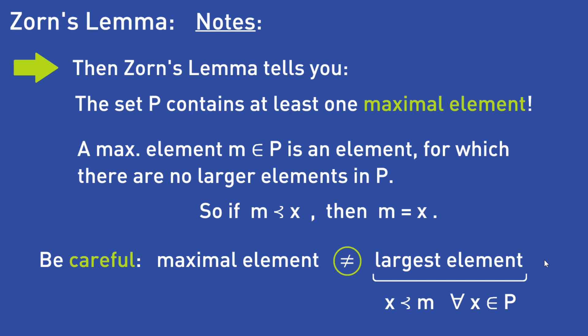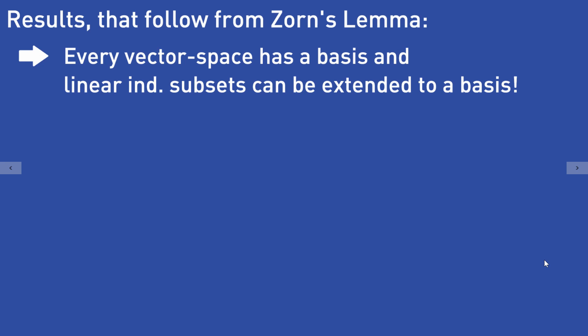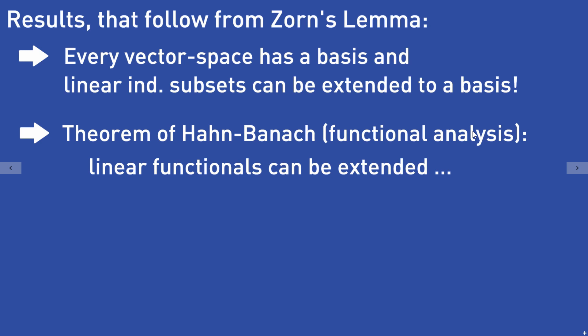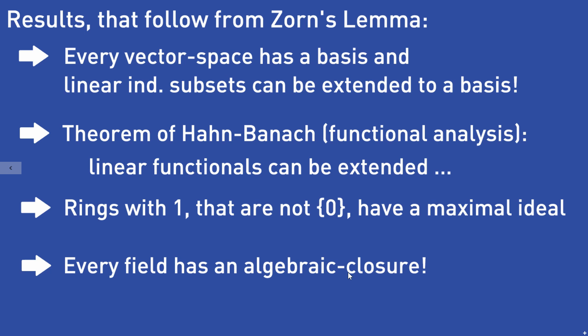Let's take a look at things that follow from Zorn's Lemma. You can show that every vector space has a basis and that linearly independent subsets can be extended to a basis. You can prove the Hahn-Banach theorem from functional analysis, which tells you that linear functionals can be extended. You can also show that every ring with one that is not the zero ring has a maximal ideal, and that every field has an algebraic closure.